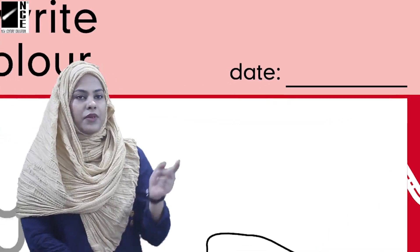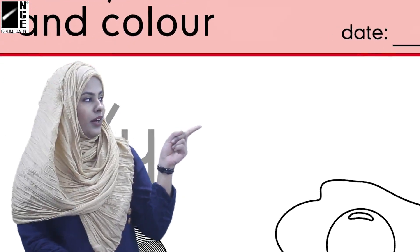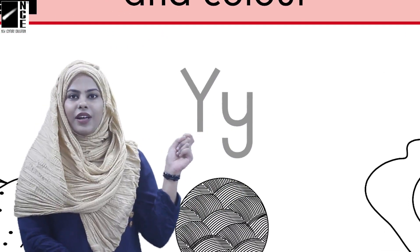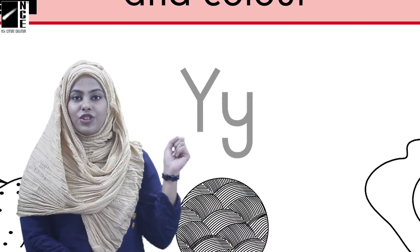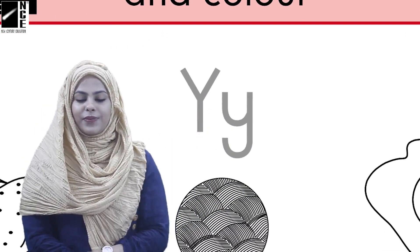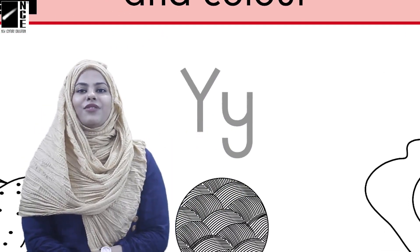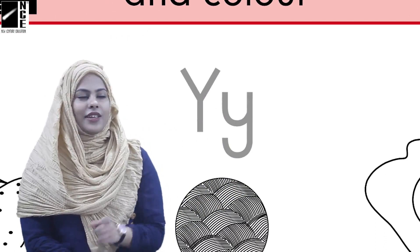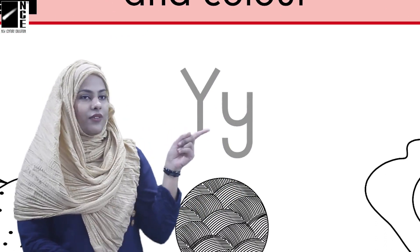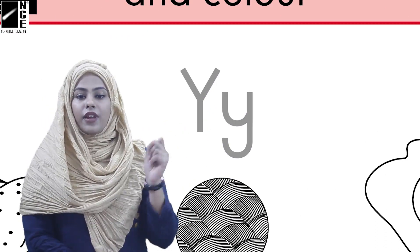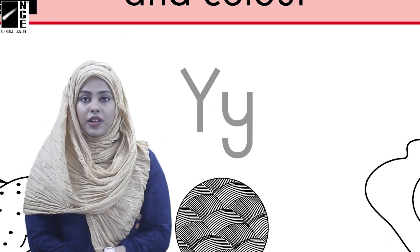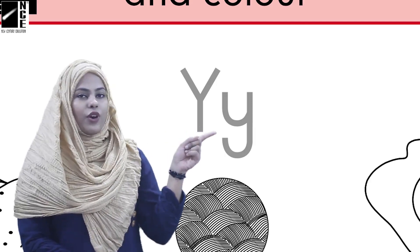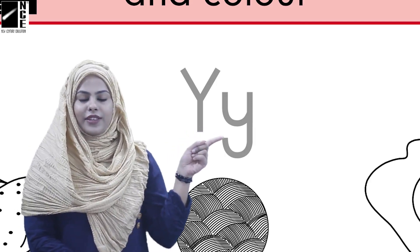Now let's see what we have here. First of all, we have a letter which is letter Y. Yes, you are right — ye letter Y hai. We have the capital letter Y and the small letter y.